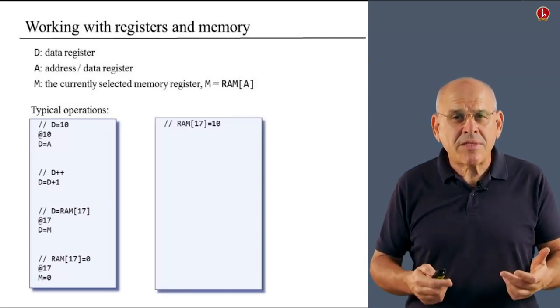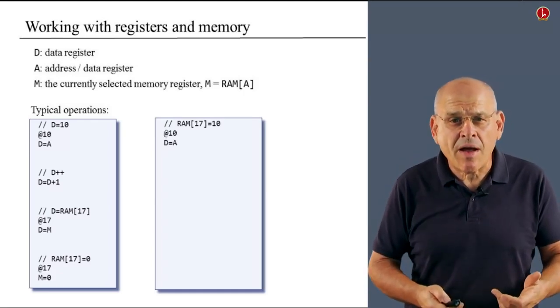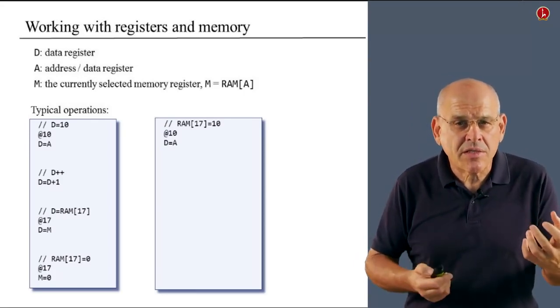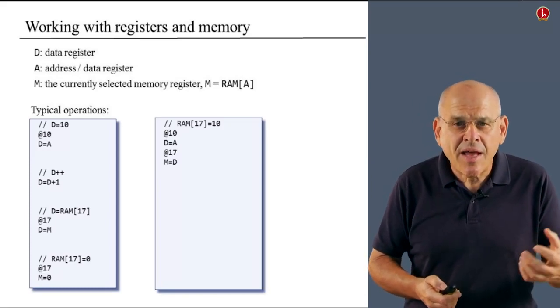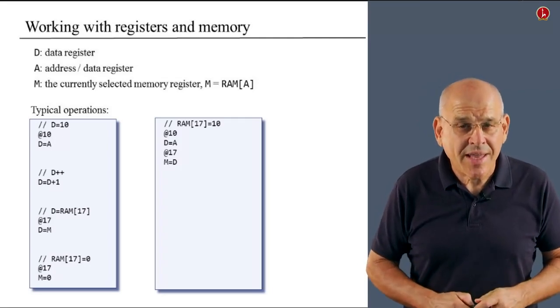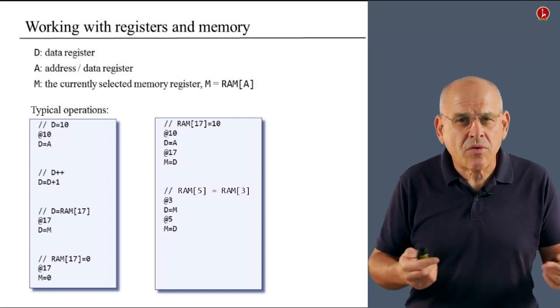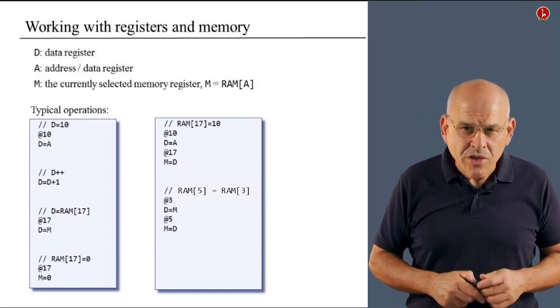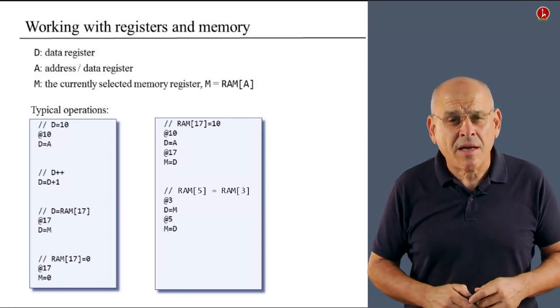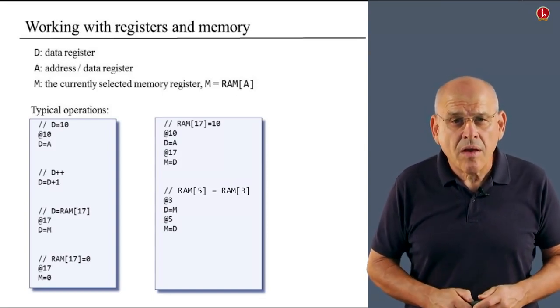What about setting D to the value of RAM 17? Well, whenever you want to access a particular memory register, you first have to address the memory. You have to select this register. So we preempt this operation with an at 17. And now having selected the register of interest, we set D to the value of this register. Likewise, we can do the reverse operation, RAM 17 equals D, and we do exactly the same but in reverse. Moving along, what about setting RAM 17 to 10? Well, I can do this using a combination of what I did before. First of all, I acquire the constant 10 somehow using these two instructions, and then I set RAM 17 to the value of D, which by now is 10.